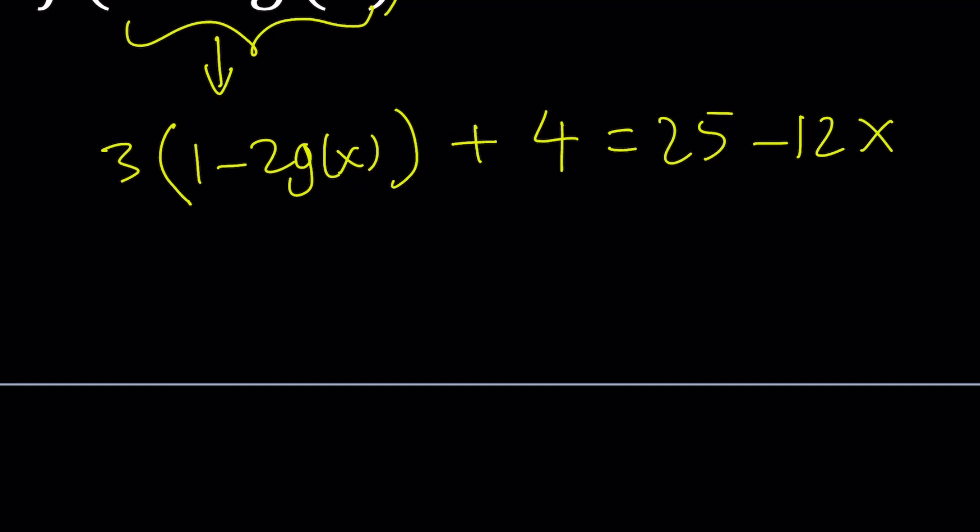Fairly easy. All you have to do is distribute and solve for g of x. But let's go ahead and do it. I'm going to distribute 3 minus 6g of x plus 4 equals 25 minus 12x.